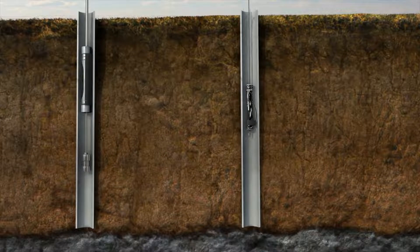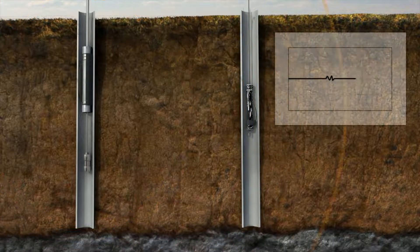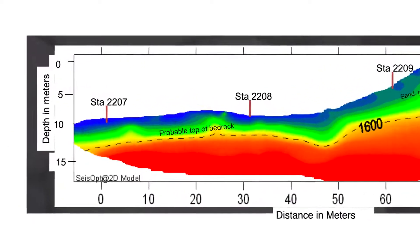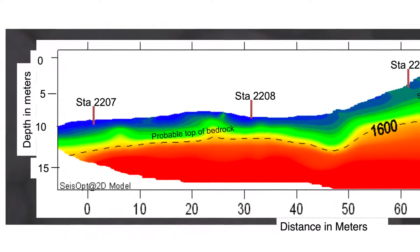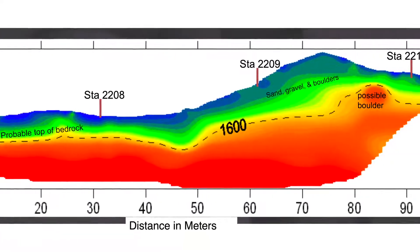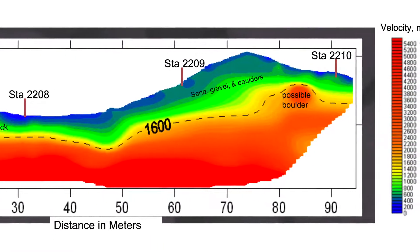Crosshole seismic testing, a downhole method, uses a source and receiver in adjacent boreholes for direct in situ measurement of shear wave velocity. All seismic methods use similar principles to provide measurement of small strain soil properties and interpretation of stratigraphy. Seismic methods are particularly useful for identifying bedrock depth and topography, identifying water, and recording changes in rock properties, including weak or weathered zones.